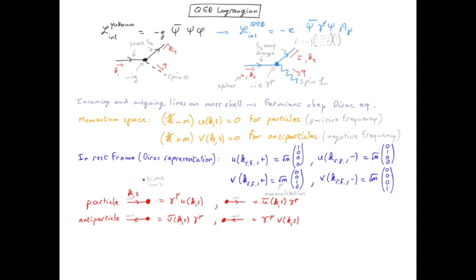Remember also that time runs from left to right, and therefore when the arrows of the fermionic line run in the same direction as time, we have a particle which is described by U or by U-bar. When they are opposites, we have an anti-particle described by V and V-bar. For example, we can apply these rules to this vertex.